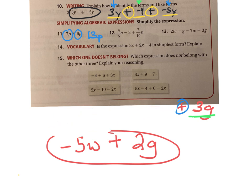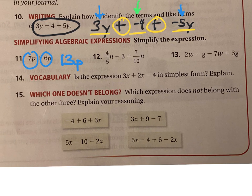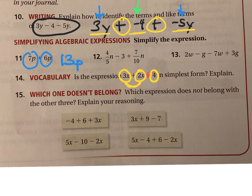Let's look at number 14. It says, is the expression in simplest form? I'm going to change that to plus a negative 4, so my terms are 3x, 2x, and negative 4. Can any of those be put together? Yes — 3x and 2x can become 5x. So is it in simplest form? No.